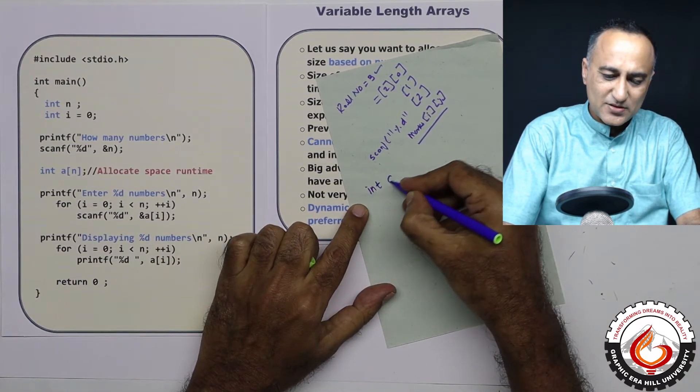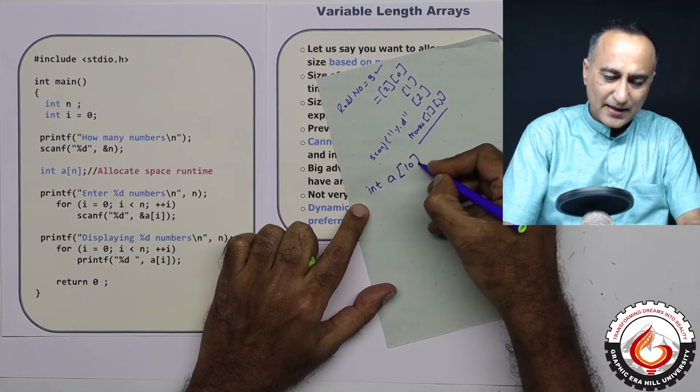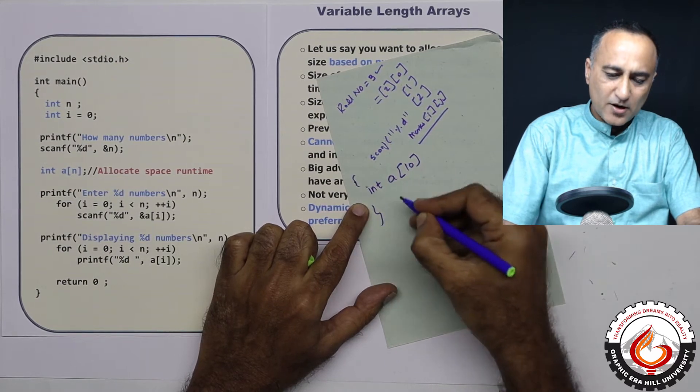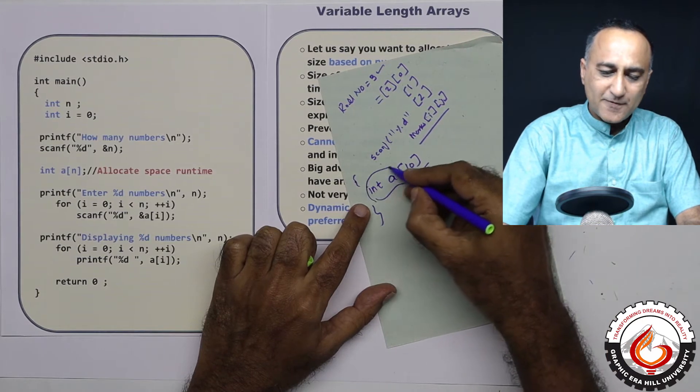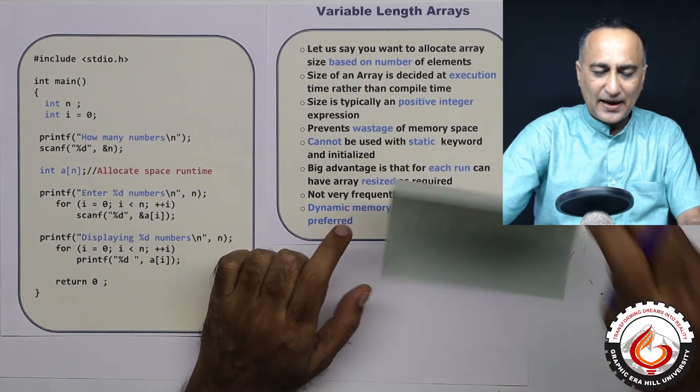So I was saying something like this: int a of n. So here I had my code. Before actually even asking the user for any input, I was fixing the size of the array.